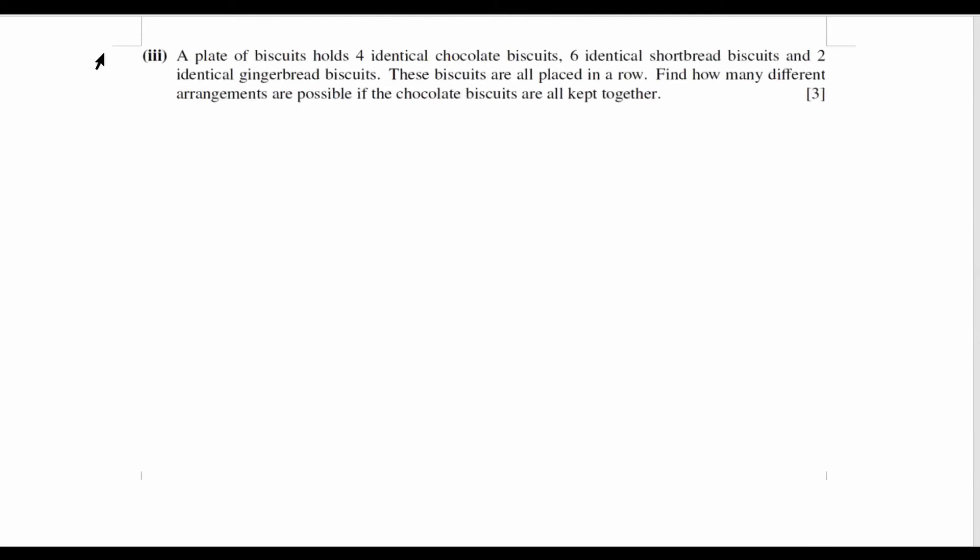The part 3 of these questions here is: A plate of biscuits holds 4 identical chocolate biscuits, 6 identical shortbread, and 2 identical gingerbread biscuits. These biscuits are all placed in a row. Find how many different arrangements are possible if the chocolate biscuits are all kept together. So from here we can tell we are looking at arrangement. And the restrictions given is the chocolate biscuits are all kept together.